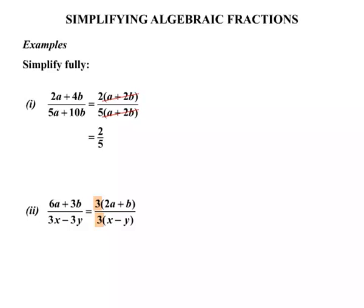Now this time the 3's will cancel. And we are left with 2a plus b over x minus y. Well nothing can cancel there. So that is our answer, 2a plus b over x minus y.